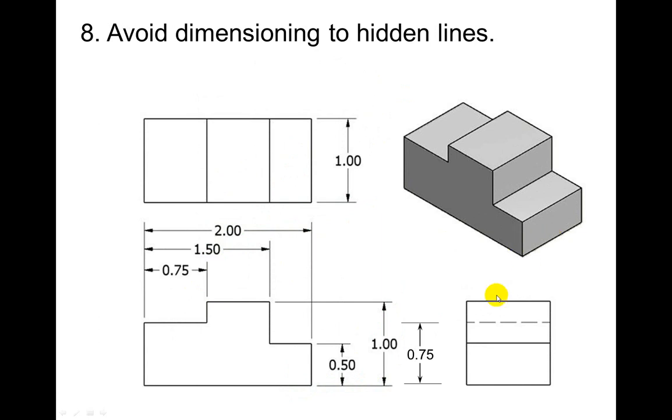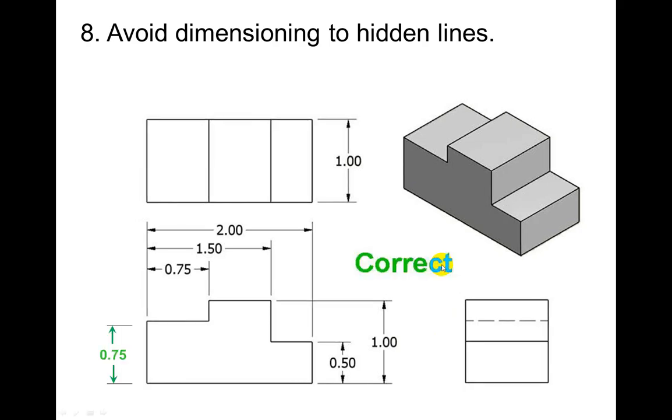Avoid dimensioning to hidden lines. This one actually is moved over a little bit, but it's showing this dimensioning to that hidden line. And you don't ever want to do that unless it's not shown in any other view as not being a hidden line. If it's always a hidden line in all of your views, that's the only time you would ever dimension to a hidden line. In this case it's not. You can see it here. So you would dimension it there instead of on a hidden line.